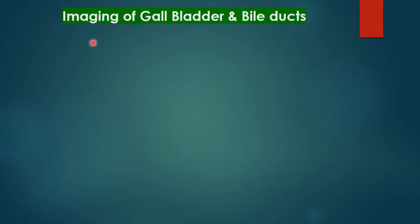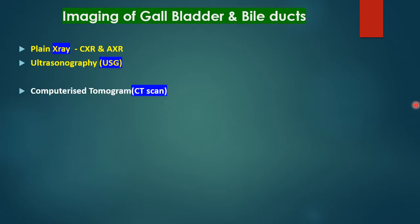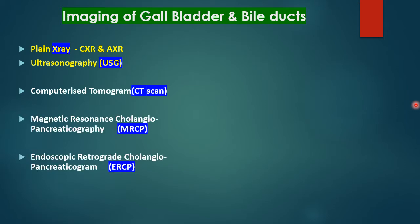Imaging methods for gallbladder and bile duct disease: first, plain X-ray — plain chest and abdominal X-ray. Second, ultrasonography — the most important initial investigations for all gallbladder and bile duct diseases. Then CT scan, which is necessary depending on ultrasound findings. MRI — magnetic resonance cholangiopancreatography (MRCP) — and endoscopic retrograde cholangiopancreatogram (ERCP). A newer investigation is endoscopic ultrasound (EUS), which is combined with biopsy for definitive diagnosis.